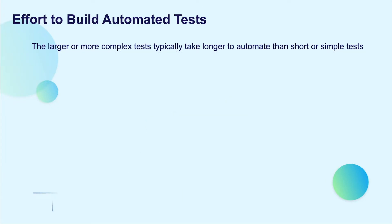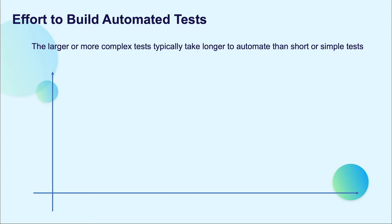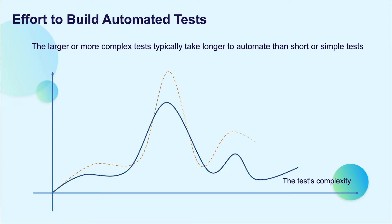Because large and complicated tests typically take longer to automate, computing the build cost for test automation may be based on an average build time. This may be further refined by comparing the average cost between a manual and automated function for a specific set of tests, such as those targeting the same function or those at a given test level. For example, it takes manual tests twice the effort of automating a test case.